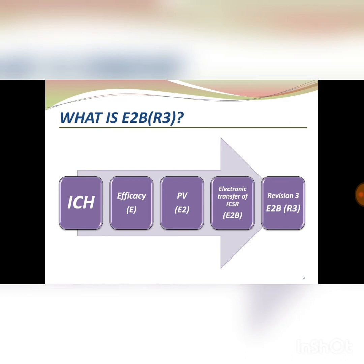The third example is causality information. In R2, you can mention the causality of a reporter and a marketing authorization holder in a structured field. But in R3, you can mention the causality information of any stakeholders — for example, reporter, marketing authorization holder, sponsor, or any other regulatory authorities — all in structured fields. So the data will be more granular in nature.